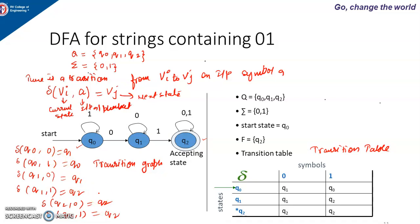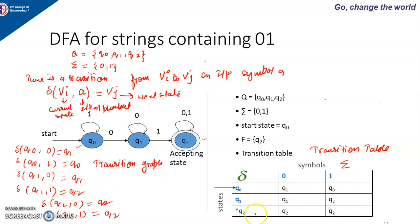If I have a transition graph, how do I write the corresponding transition table? We write the set of states on one side and the input symbols on the other — here there are two symbols, 0 and 1. For the start state we write an arrow with the state, and for the final state we write a star. For Q0 input 0 the next state is Q1, for input 1 it is Q0. For Q1 input 0 it is Q1, input 1 it is Q2. For Q2, both inputs 0 and 1 give Q2.